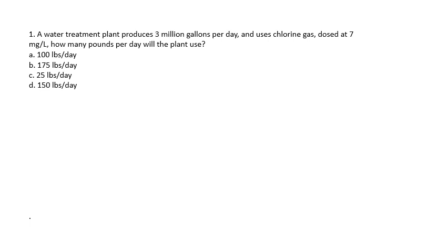Question number one. A water treatment plant produces 3 million gallons per day and uses chlorine gas dosed at 7 milligrams per liter. How many pounds per day will the plant use? A: 100 pounds a day. B: 175 pounds a day. C: 25 pounds a day. Or D: 150 pounds a day. Pause if you're going to work through this yourself, because I'm going to start working through the answer on the next slide.